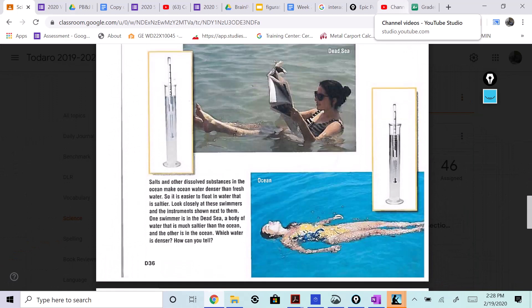And other dissolved substances in the ocean make the ocean water dense, denser than fresh water. So it is easier to float in water that is saltier. Look closely at these swimmers and instruments shown next to them. One swimmer is in the Dead Sea, a body of water that is much saltier than the ocean, and the other is in the ocean.